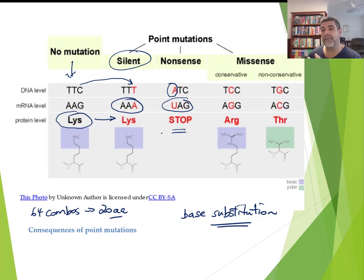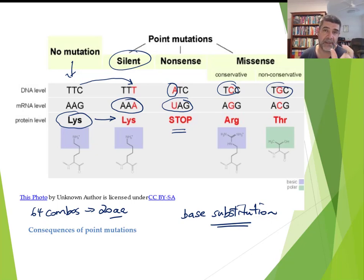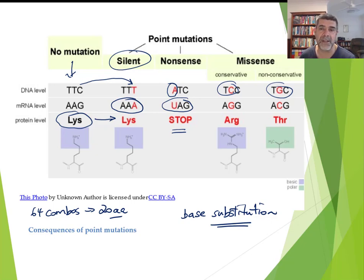The other type of point mutation is called a missense mutation. This means the change produces a different amino acid — we don't have a stop codon, but we have just one incorrect amino acid. One incorrect amino acid in the polypeptide chain can seriously affect the function of the protein. There are also subgroups of missense: conservative and non-conservative, which relate to the type of bonding associated with the different amino acids.